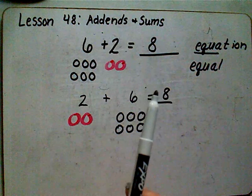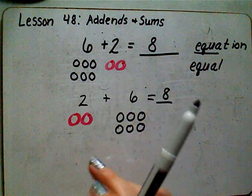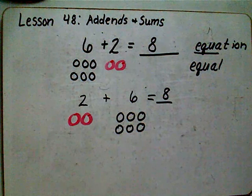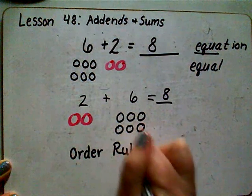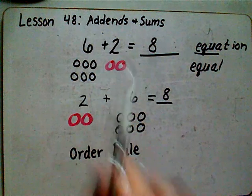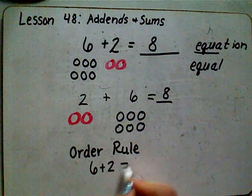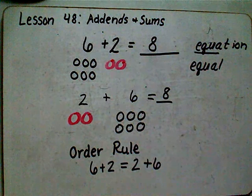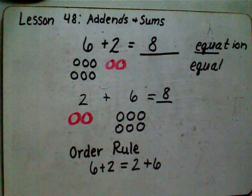That's why it is eight in both of them. It is the same add-ins being joined, they are just in a different order. We call that the order rule. This rule tells us that it doesn't matter what order you add — six plus two is going to be the same as two plus six. Those are switcheroo facts, and no matter what order we add, we're always going to get the same answer.